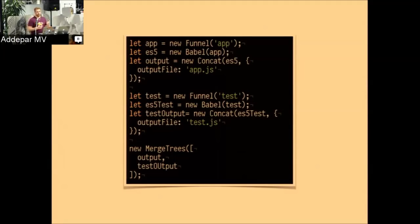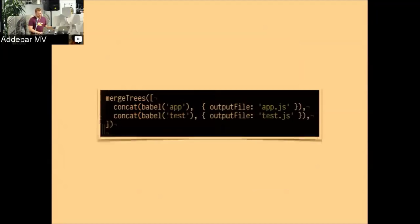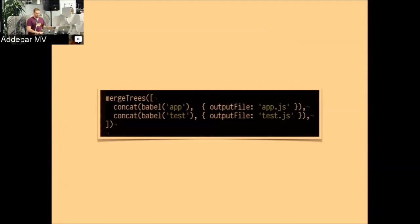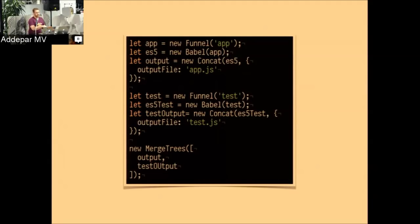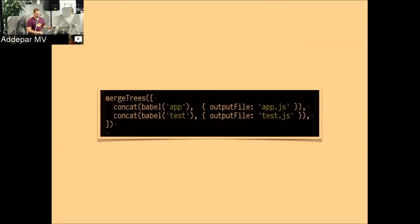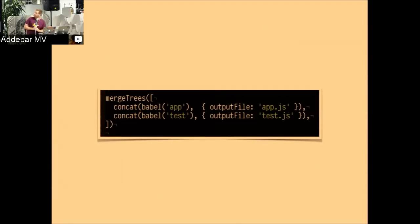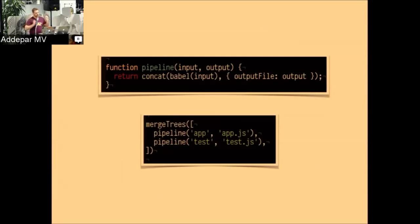Taking all these together we can construct something similar to typical application build pipelines: grab the app, Babelify it, concat it into an output app.js; do the same for tests; then merge them together. This is a bit verbose but fully formed. You can reduce it to something simpler — Babel plugins support both the class-style 'new' invocation and the call-constructor style. If you're building a pipeline quickly, the second style is more ergonomic. You can abstract further by making a function that returns a new Broccoli pipeline and uses merge-trees to compose any Broccoli pipeline inputs.